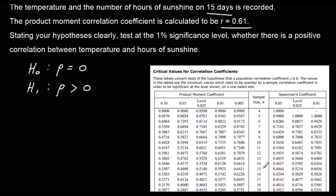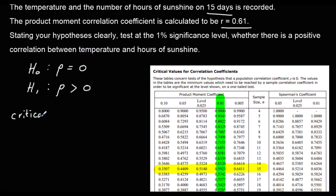We've got our table from the formula book and we've got a sample of 15, so we're looking at the 15 line. We're testing at the 1% significance level, so our critical value is 0.5923.